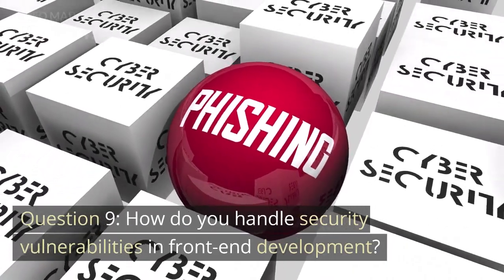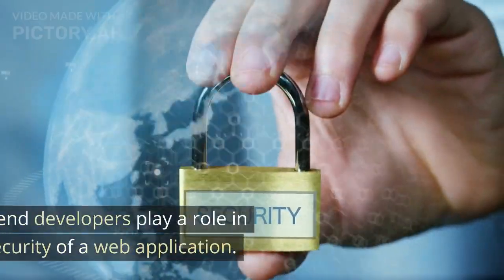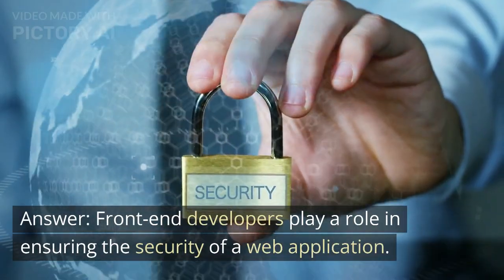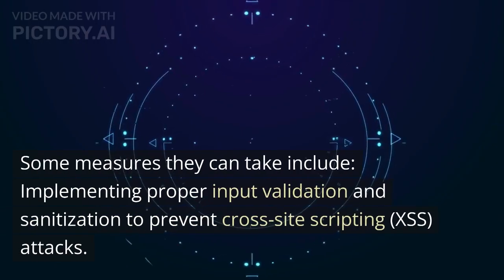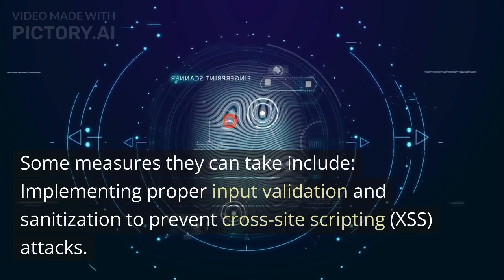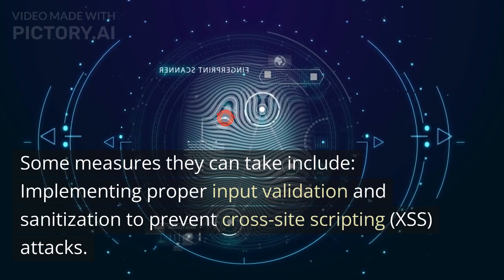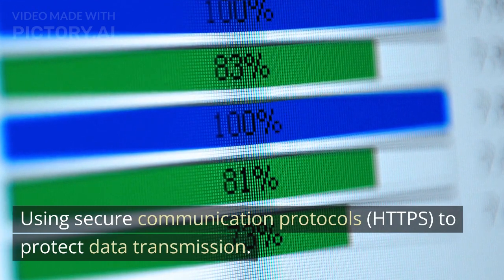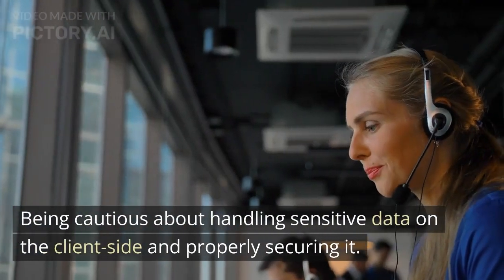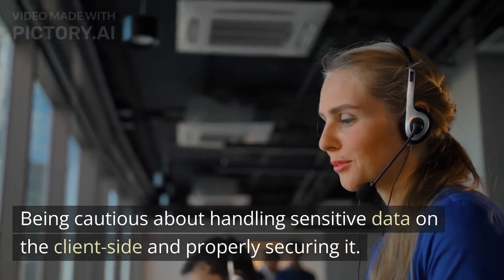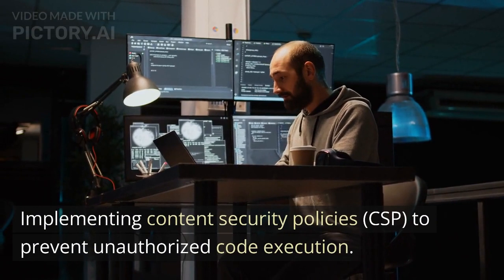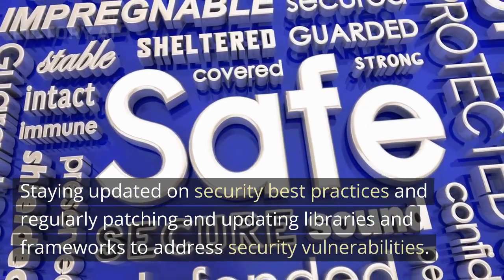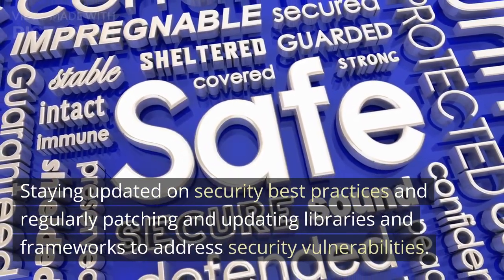Question 9: How do you handle security vulnerabilities in front-end development? Answer: Front-end developers play a role in ensuring the security of a web application. Some measures they can take include: implementing proper input validation and sanitization to prevent cross-site scripting (XSS) attacks; using secure communication protocols (HTTPS) to protect data transmission; being cautious about handling sensitive data on the client side and properly securing it; implementing content security policies (CSP) to prevent unauthorized code execution; and staying updated on security best practices and regularly patching and updating libraries and frameworks.